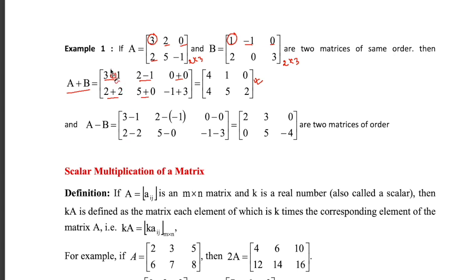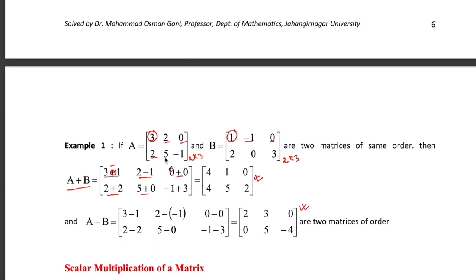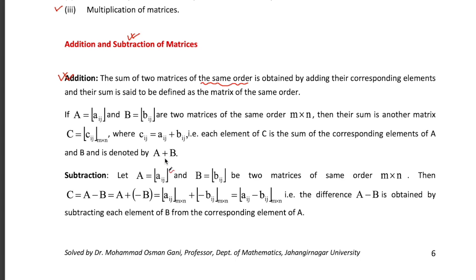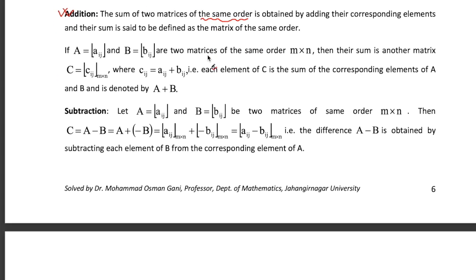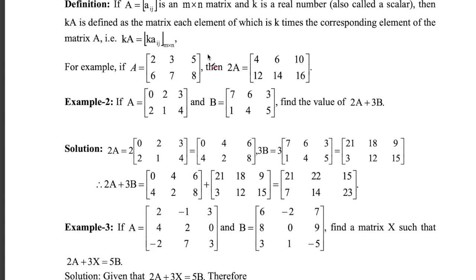For A minus B, you replace the addition sign with a negative sign: 3−1, 2−(−1), 0−0, 2−2, 5−0, −1−3. This gives the subtraction A−B. Next is scalar multiplication — to multiply a matrix by a number, you multiply each entry of the matrix by that scalar. There is no condition for scalar multiplication.